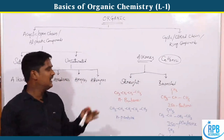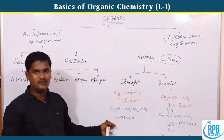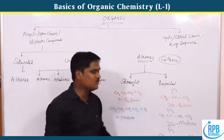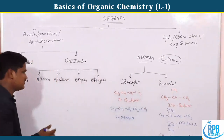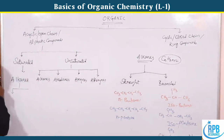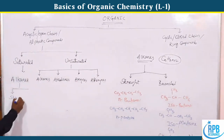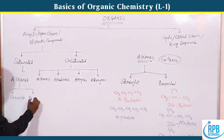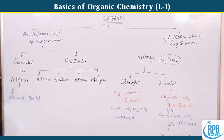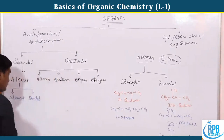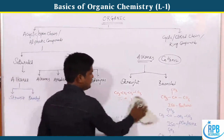So alkanes are further classified into straight chain and branched chain types. The prefixes iso- and neo- are used to indicate branched chain alkane compounds.